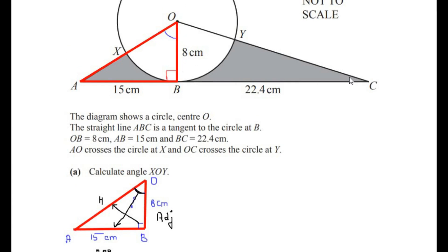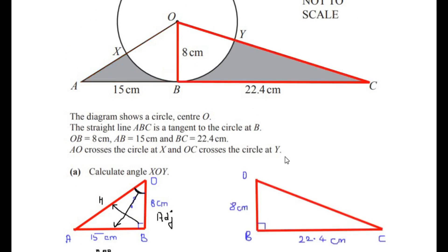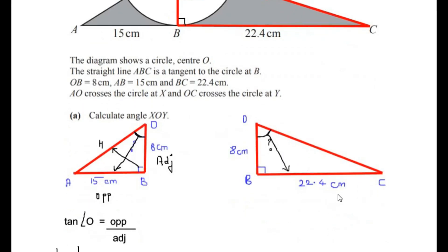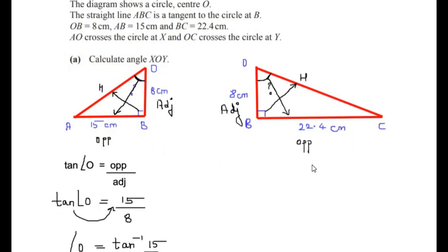Now we do the same for triangle OBC. This triangle is also right-angled at B because it is the same radius OB connected to the tangent ABC. We need to find this part of angle O. Again, the side opposite to angle O is 22.4 centimeters. The side opposite to 90 degrees is the hypotenuse and the remaining side is the adjacent side. We are going to use the tangent ratio again because both opposite and adjacent sides are given.